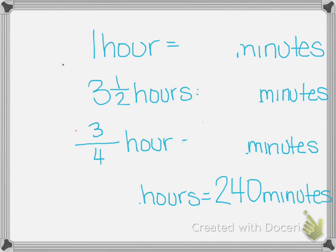Number 4 says complete. 1 hour equals blank minutes. I know 1 hour equals 60 minutes. So the next one says 3 and a half hours equals blank minutes. So 3 hours would be 3 times 60. 3 times 0 is 0. 3 times 6 is 18. So 180.